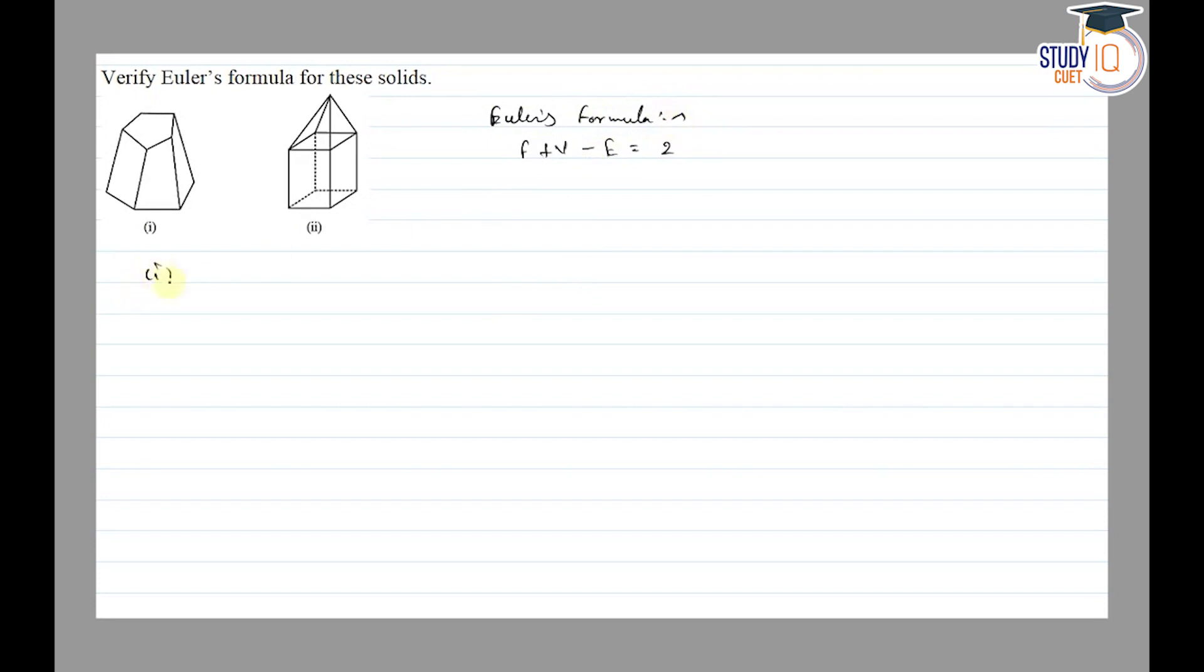So for the first solid, we will find out F, V, and E. F is number of faces: 1, 2, 3, 4, 5, 6, and bottom is 7. Then vertices: 1, 2, 3, 4, 5, and bottom, so 10. Then edges: 1, 2, 3, 4, 5, 6, 7, 8, 9, 10, 11, 12, 13, 14, 15.